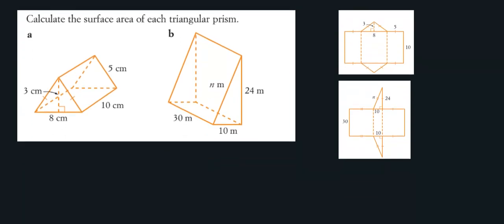Now let's look at some more complicated questions. Here we have some triangular prisms. Pause the video and see if you can find the surface areas of each. In question B, instead of giving you a length I've given you n centimeters, and you'll need to use Pythagoras's theorem to calculate the hypotenuse. Pause the video and have a go, then we'll do the solutions.